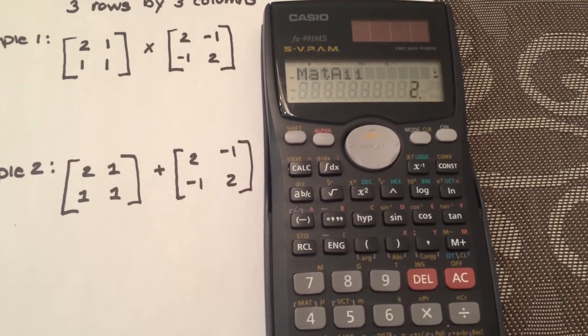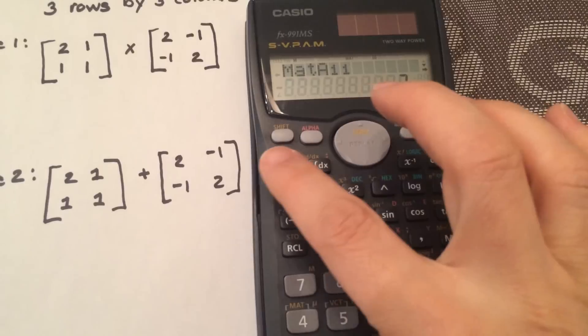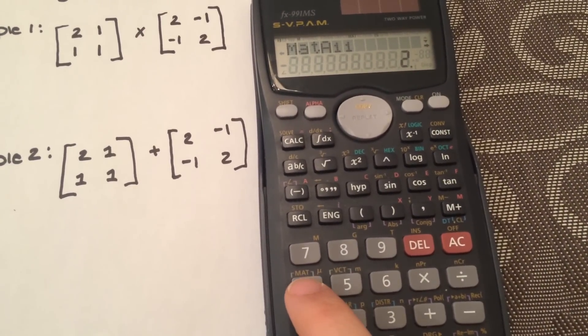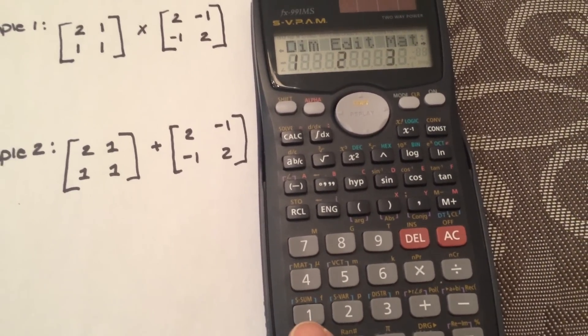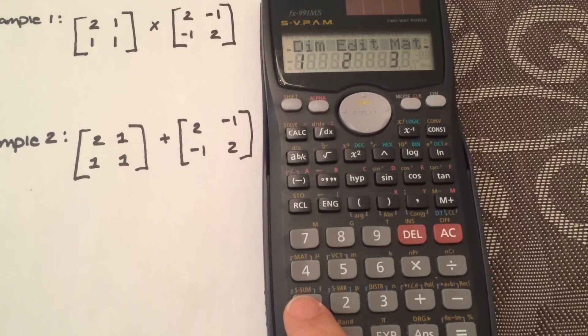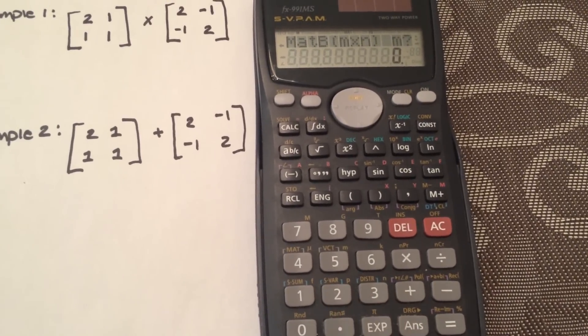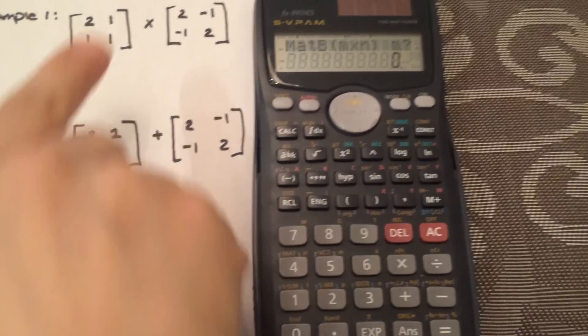Now we're going to do matrix B. We're going to go shift again, and then 4. On top you'll see matrix dimensions again. So you're going to hit 1, and then we're working on matrix B, so 2. And again, it wants the dimensions.